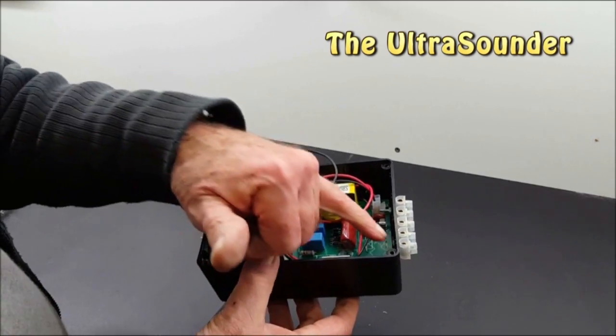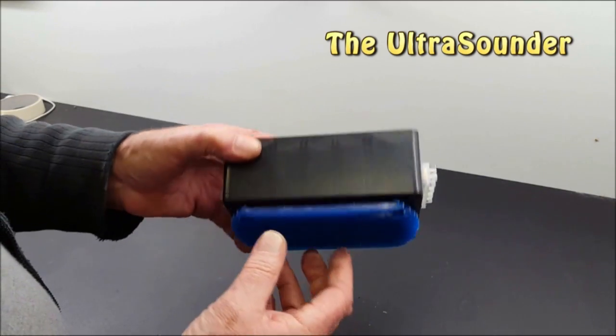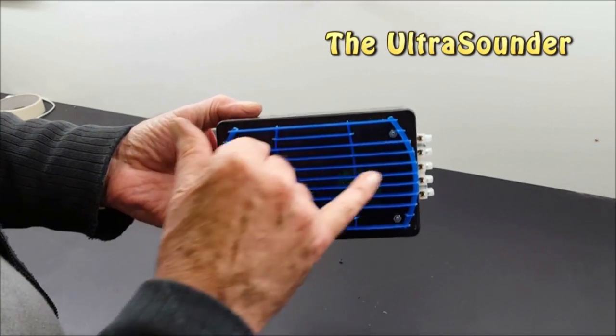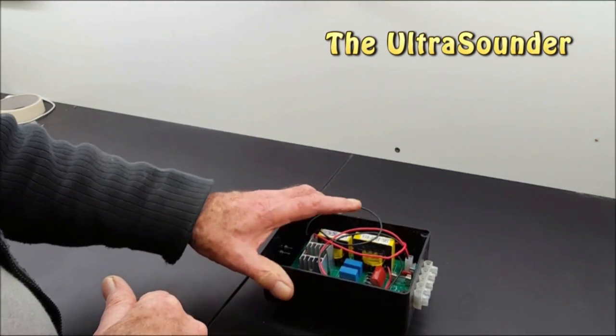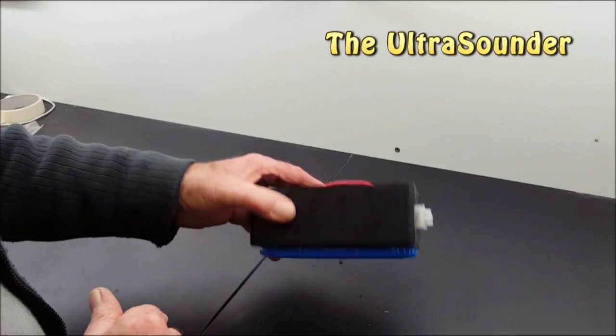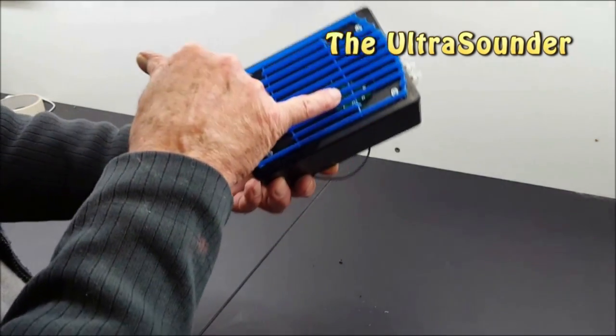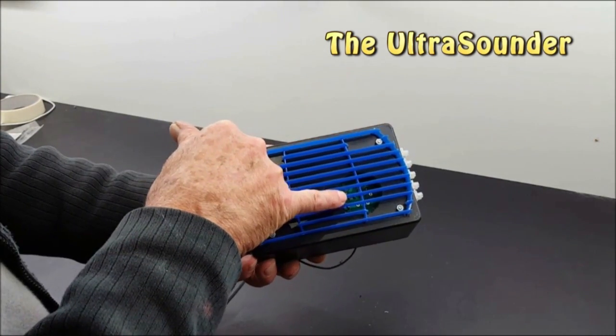If you look underneath, there's this which has two functions: it keeps it off the bench a little bit, which is good in case you spill anything on the bench - and I often do - but also through there I think you may be able to see there's a hole which allows air to flow out from inside the box.